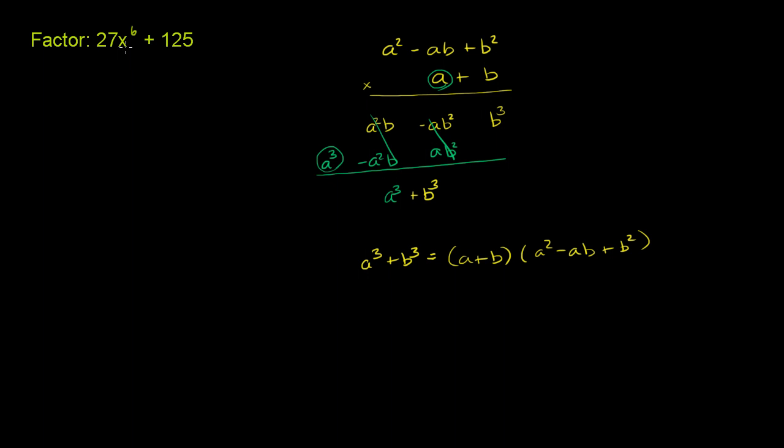x to the sixth is also the cube of x squared. If you raise x to the sixth to the 1 third power, you get x squared. So this first term right over here can be rewritten as 3x squared to the third power.